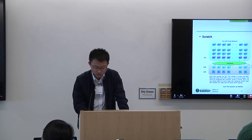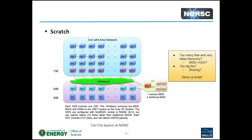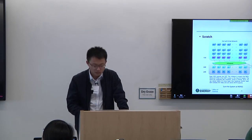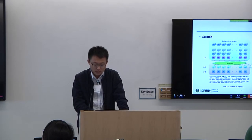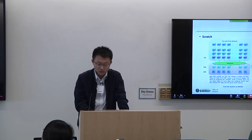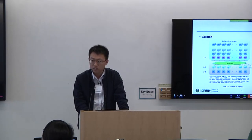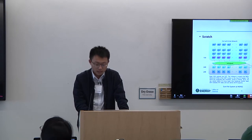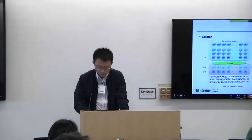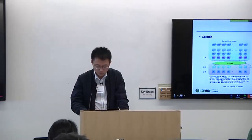There are two important things to remember. First, when you have too many files and a very deep directory hierarchy and you see poor performance on the Scratch file system, you may want to consider moving your metadata from the primary server to one of the additional servers — you can contact us by email. Second, if you have a very large file, like 100 gigabytes or one terabyte, you may consider striping to get optimal IO performance. We'll talk about how to do that later using a simple command.